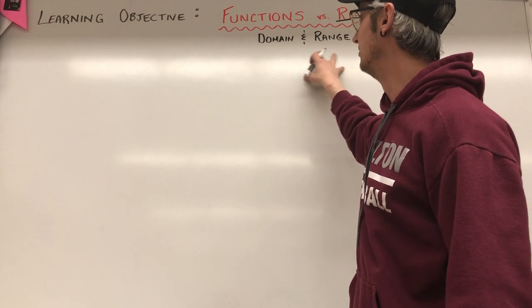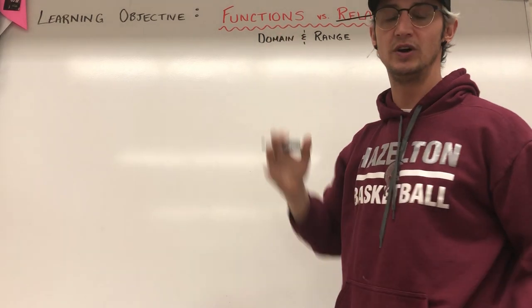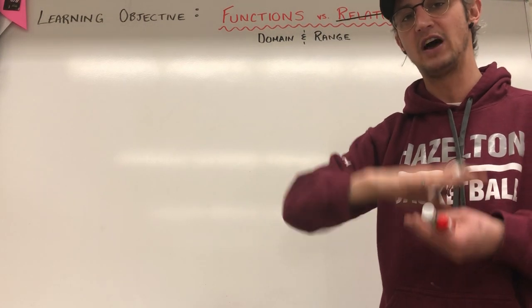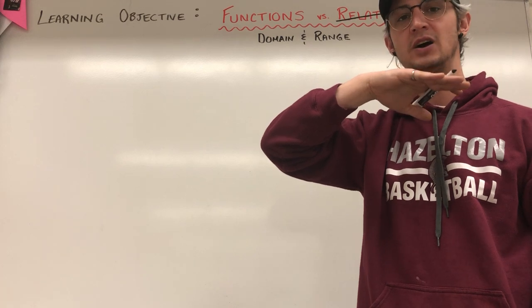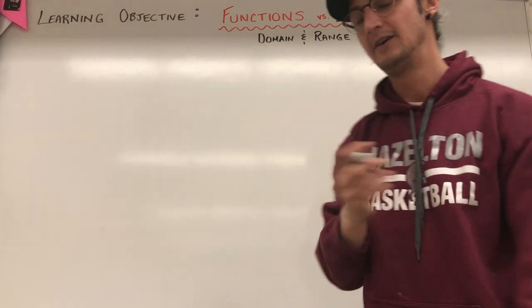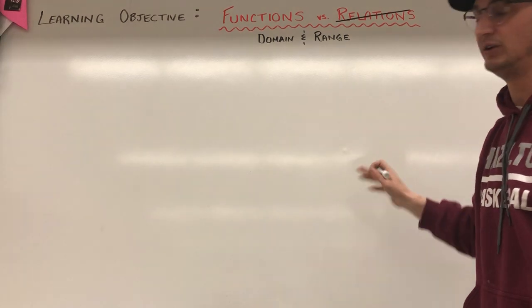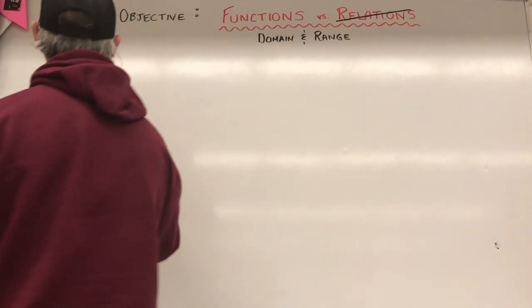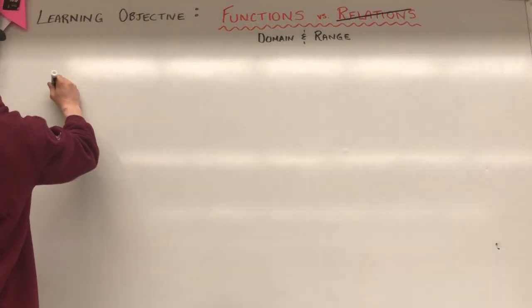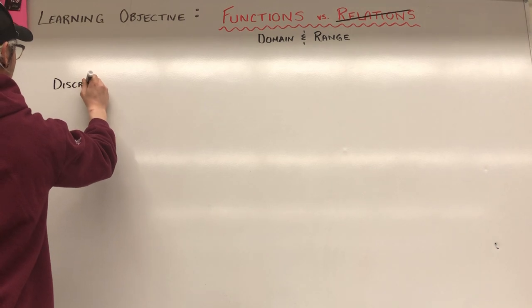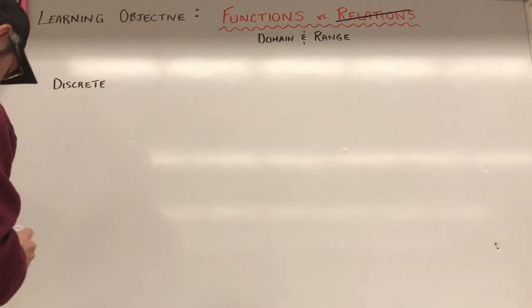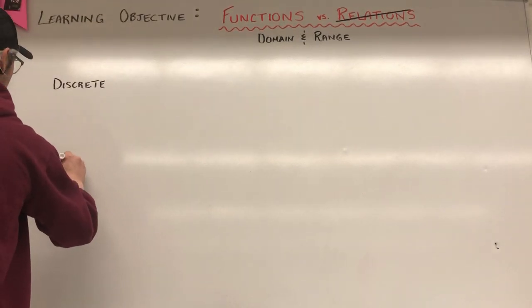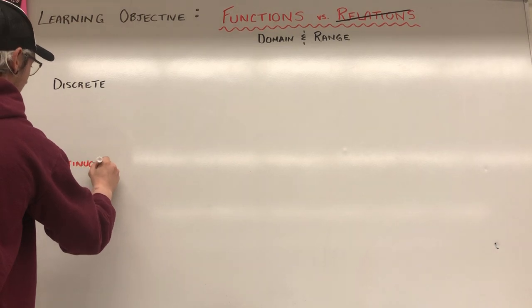We're going to start talking about domain and range. Essentially, domain is what are the values of x for which my function can exist, and range is what are the values of y for which my function or graph exists. In order to have those conversations, we need to talk about two types of graphs: discrete data points and continuous.